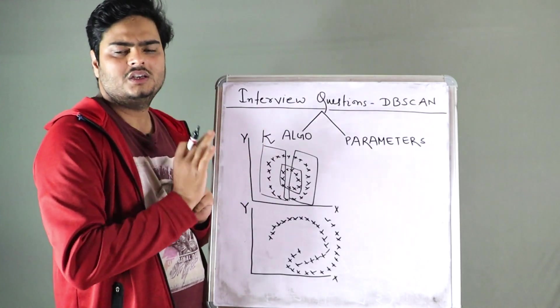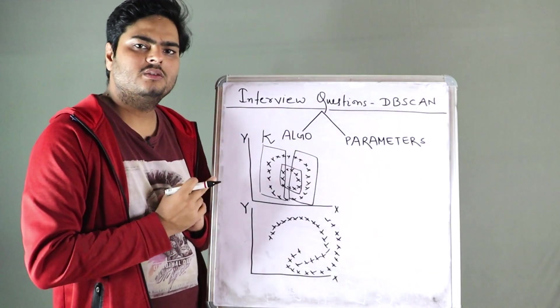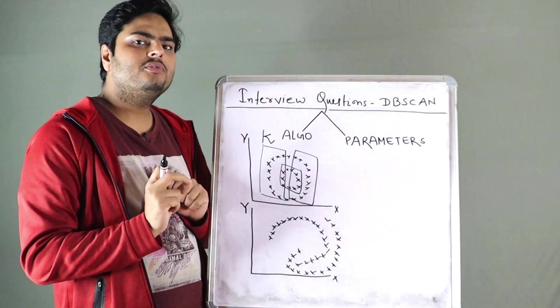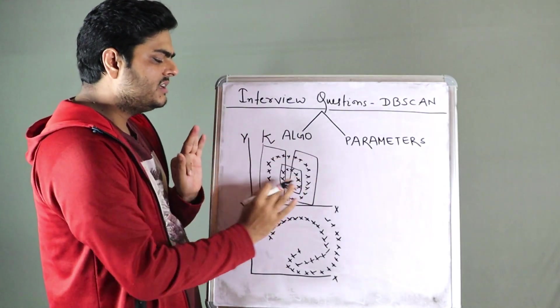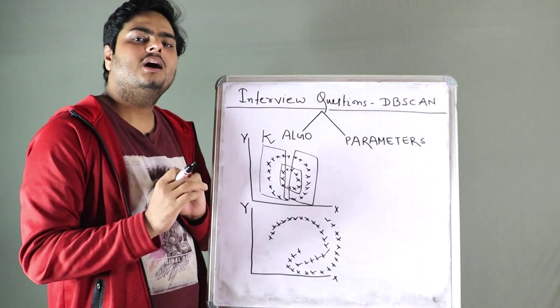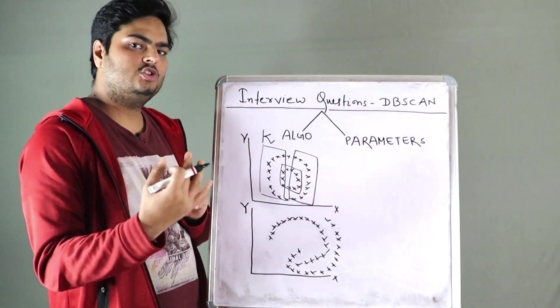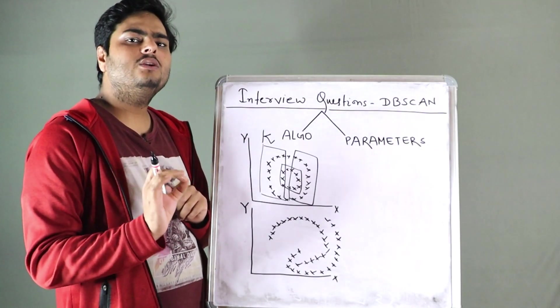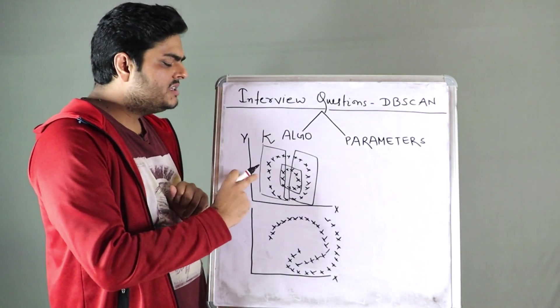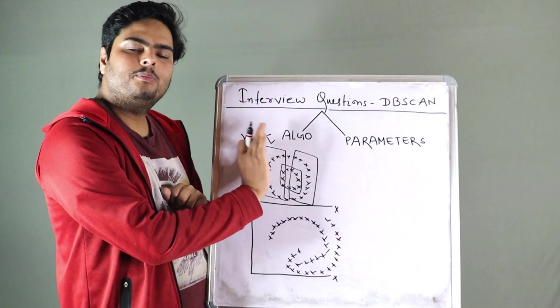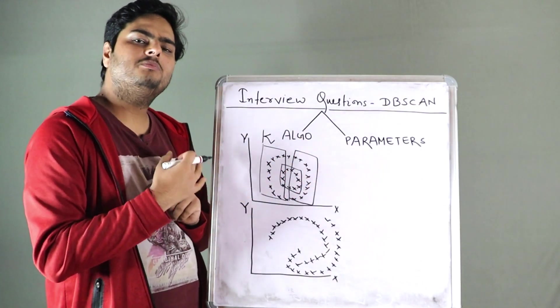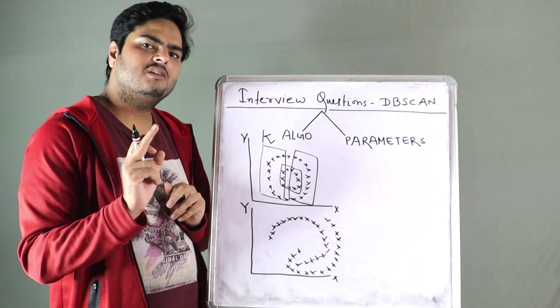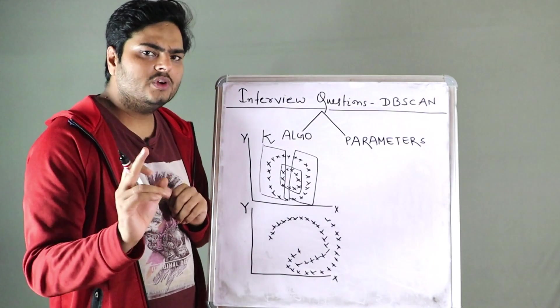Some of the disadvantages of DB scan clustering. First one guys, your clustering is not going to do good if the data scatter or the data alignment is not how DB scan expects it to be. What is the meaning of this guys? DB scan expects data to be in, you know, density-wise data should be allocated in the plane. If your data is something which is suitable for K-means, maybe this algorithm will not do good. That is disadvantage number one. Disadvantage number two is,